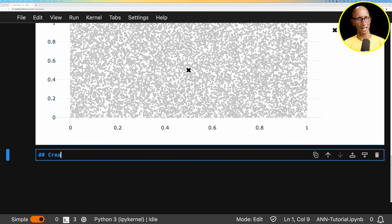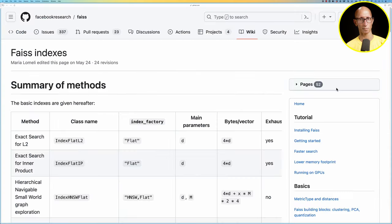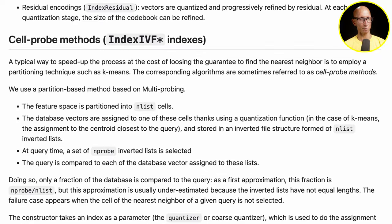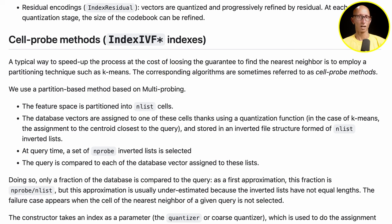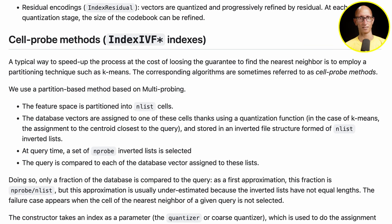Now we're going to create a cell probe index. Looking at the documentation, what these methods do is partition the vector space into a number of cells — in this case using the k-means algorithm. Then when we search with a search vector, it finds the cell closest to our search vector and does a search across all the other vectors that fall in that cell to see which ones are closest.